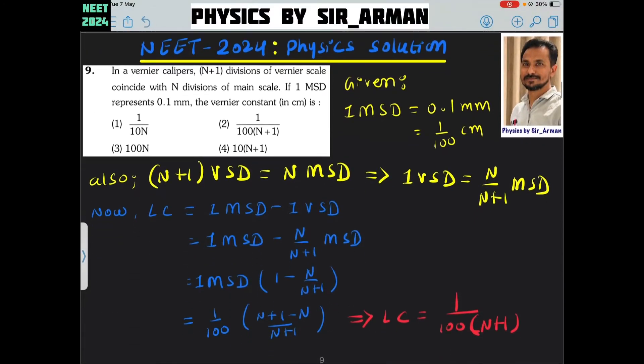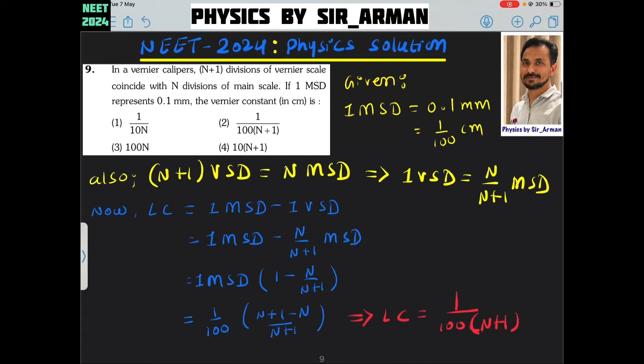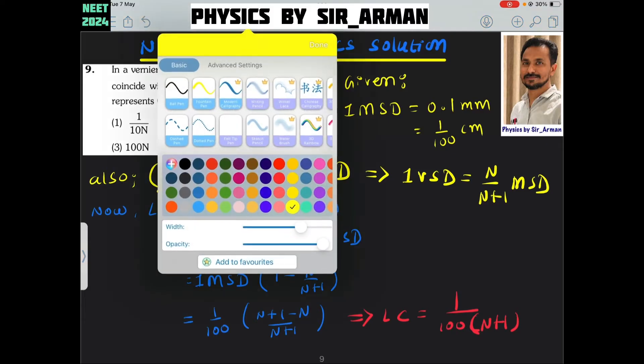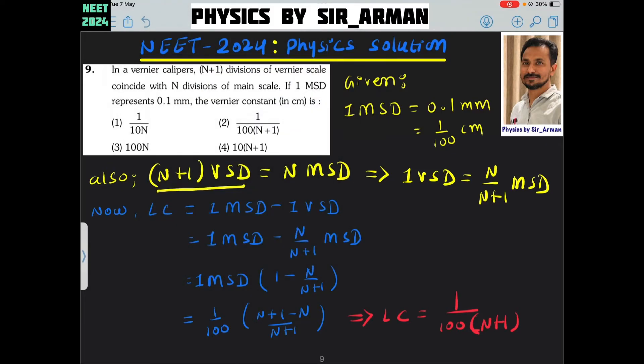Next, question number 9. In a vernier caliper, n plus 1 divisions of vernier scale coincide with n divisions of main scale. As per the given data, n plus 1 VSD means n plus 1 vernier divisions coincide with n divisions of main scale.